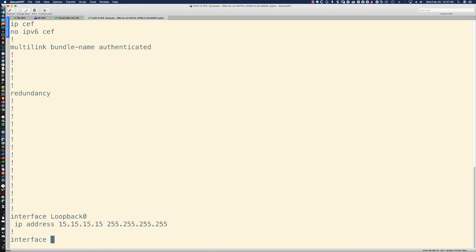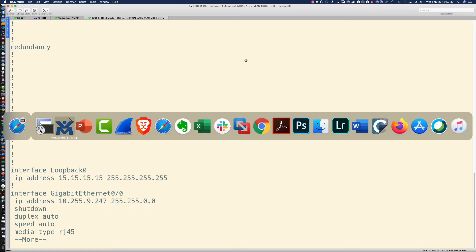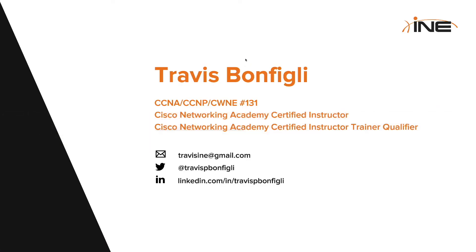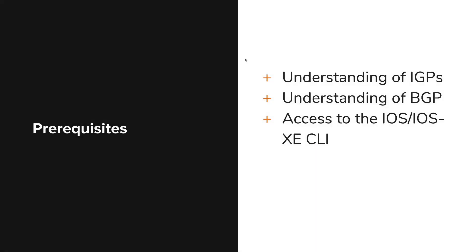Let's talk about some of the prerequisites related to this course. Specifically, we need to have an understanding of IGPs — and that means OSPF, EIGRP, and RIP. You also need to have an understanding of BGP, the Border Gateway Protocol. And importantly, you need access to the IOS or IOS XE CLI.